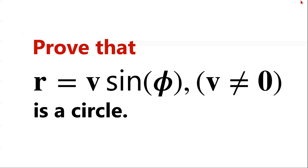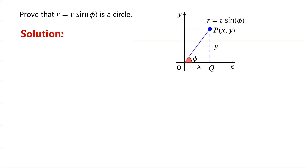Prove that r equals v·sin(φ), where v does not equal zero, is a circle. Let P denote a point at coordinates x, y. So OQ equals x, PQ equals y, and OP equals r — that is, v·sin(φ). In the right-angled triangle OPQ, we know that...